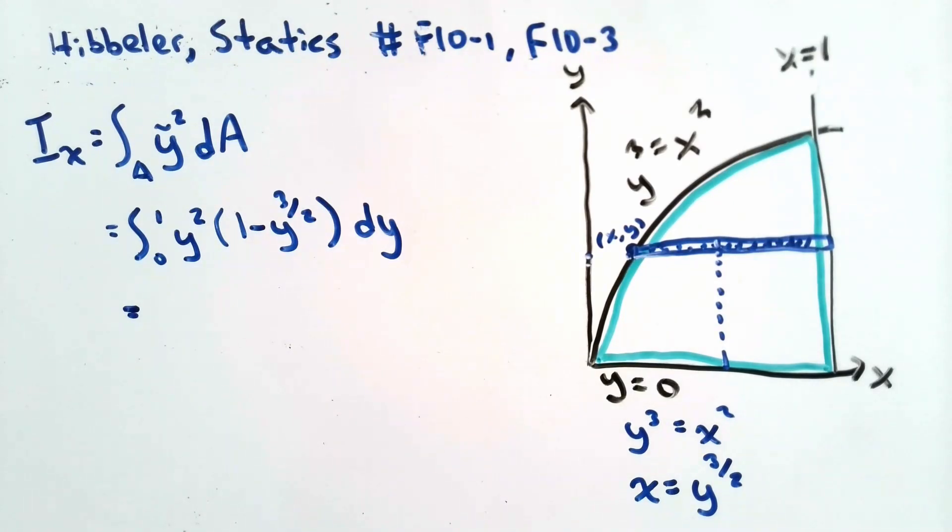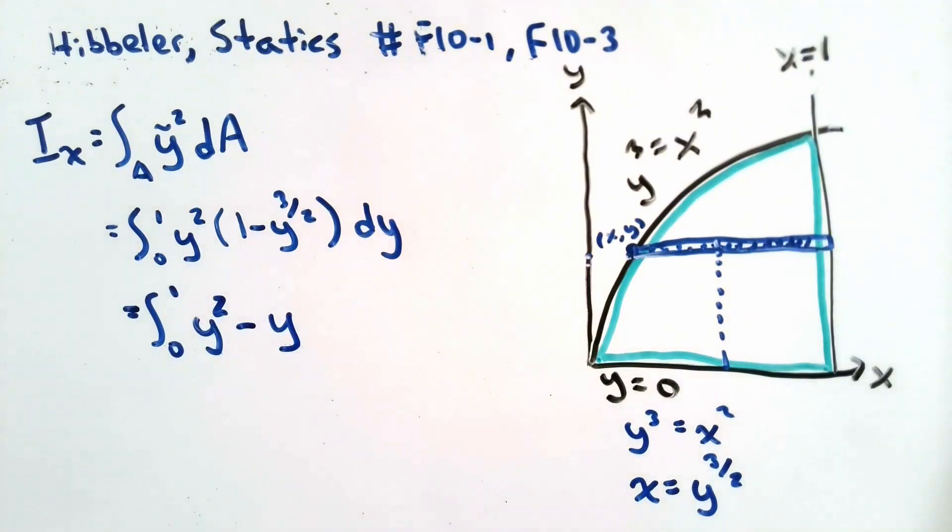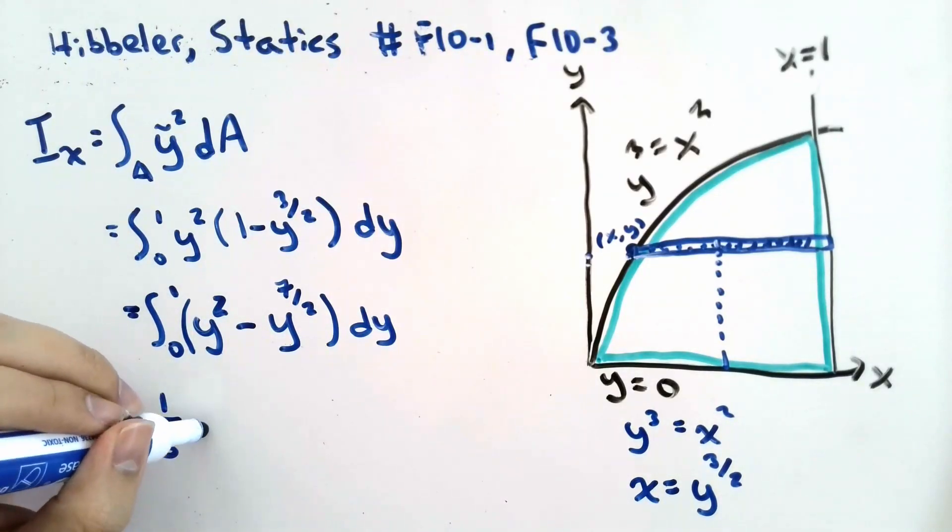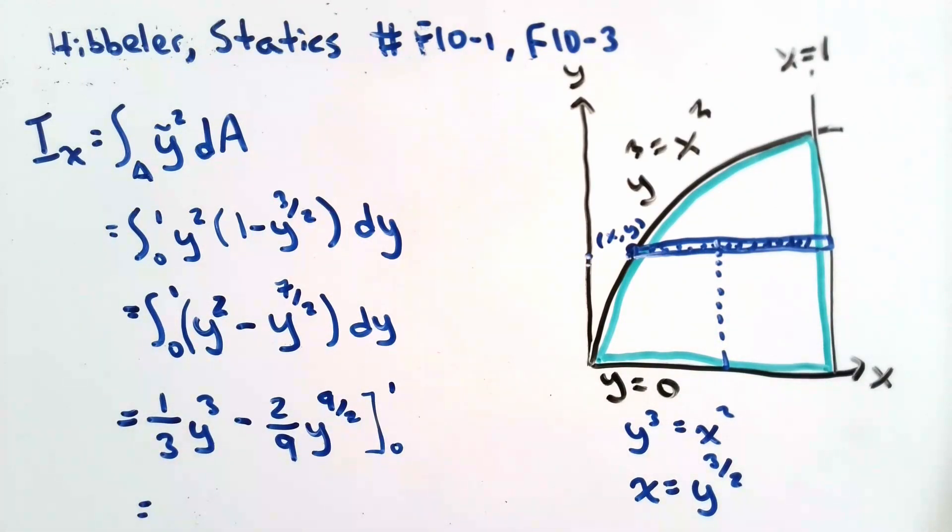Now, this doesn't look like an easy integral to solve. But if we evaluate it, it's actually not that difficult. We can multiply y to get y squared minus y elevated to the power of 2 plus 3 over 2, which is simply 7 over 2. And now we can solve this integral. Evaluating this integral from 0 to 1 will give us 1 third minus 2 ninths. This is equal to 1 ninths, or approximately 0.111 units to the power of 4.